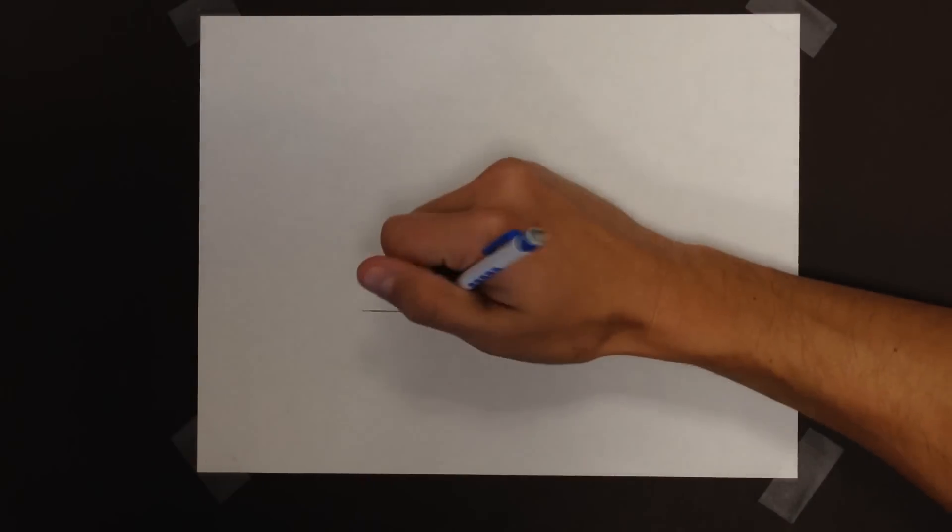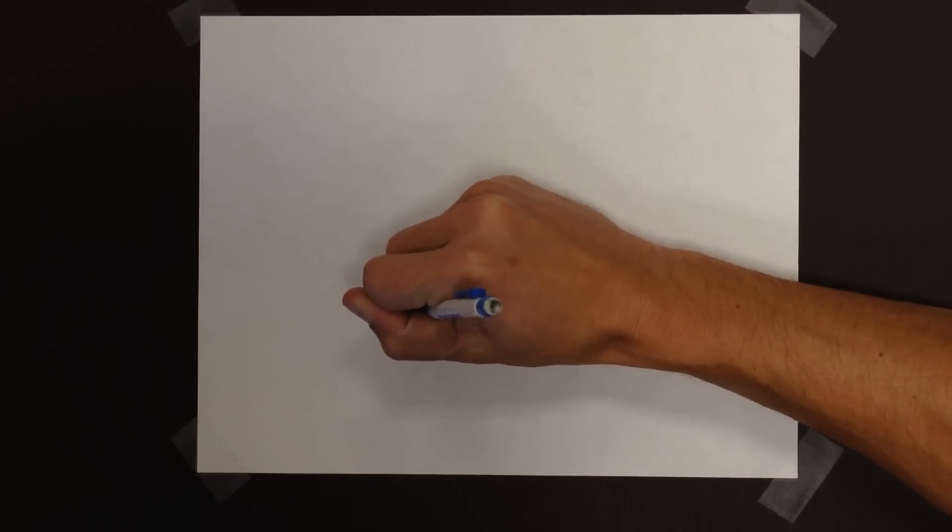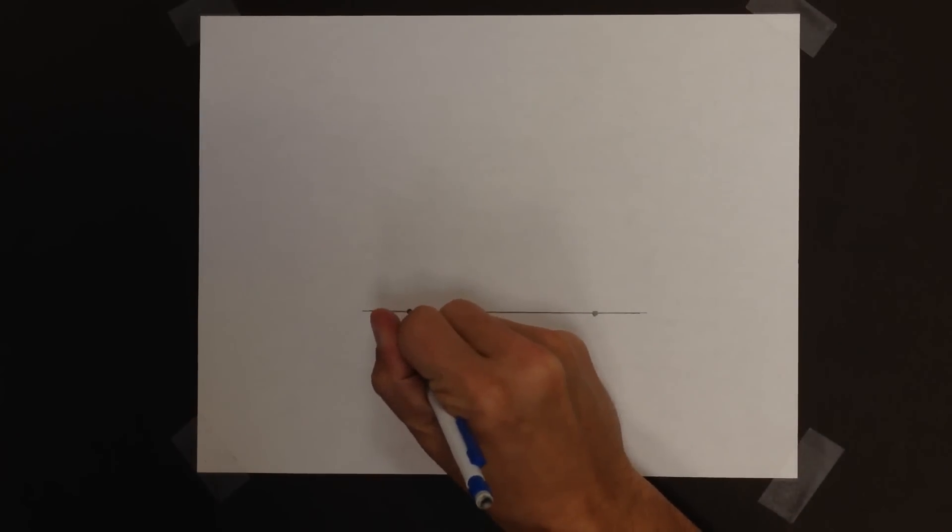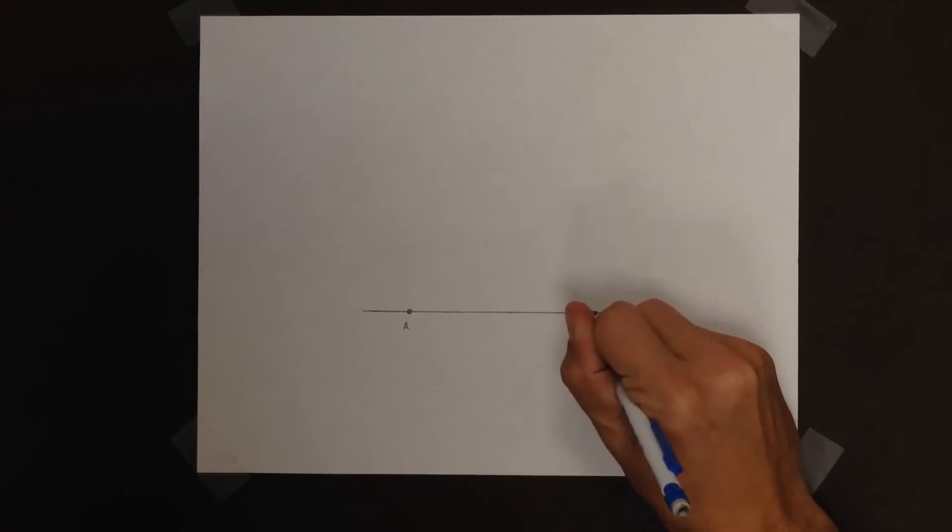You probably have a length that you may want to use. I'll arbitrarily say I want my end points of the base to be here and there. So I've got my two end points, we'll call this A, call that B, and we'll call it good.